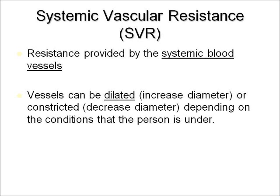Systemic vascular resistance — we also use total peripheral resistance (TPR), and we're going to use those interchangeably for this lab. It is the resistance provided by the systemic blood vessels. Vessels can be dilated, meaning increased in diameter, or constricted, meaning decreased in diameter, depending on the conditions the person is under.